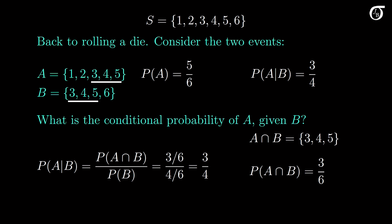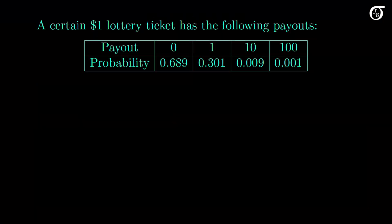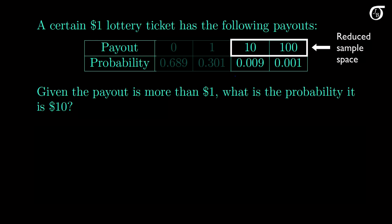Now let's look at a simple example where the sample points are not equally likely. Suppose that a certain simple lottery has these payouts for a $1 ticket. Most of the time we lose our money, sometimes we get our money back, and occasionally we make a profit. Given the payout is more than $1, what is the probability it is $10? If we know the payout is more than $1, then 0 or 1 can't have occurred, and that reduces our sample space down to these two possibilities. So if we know the payout is greater than $1, there's a 90% chance it's $10.